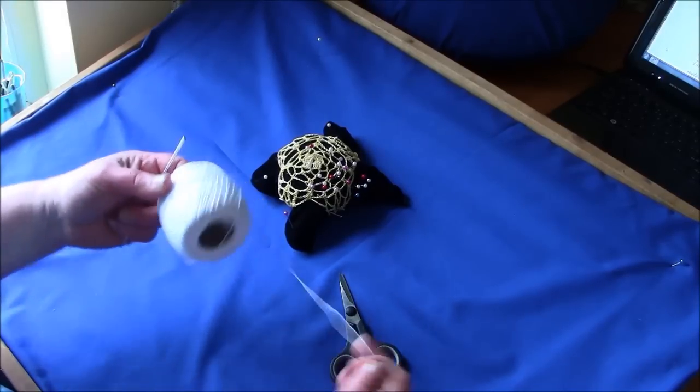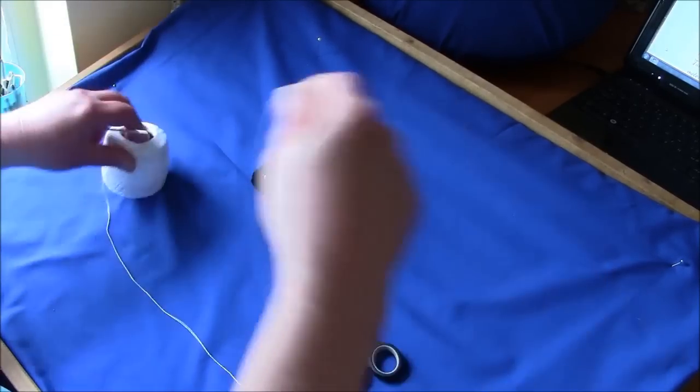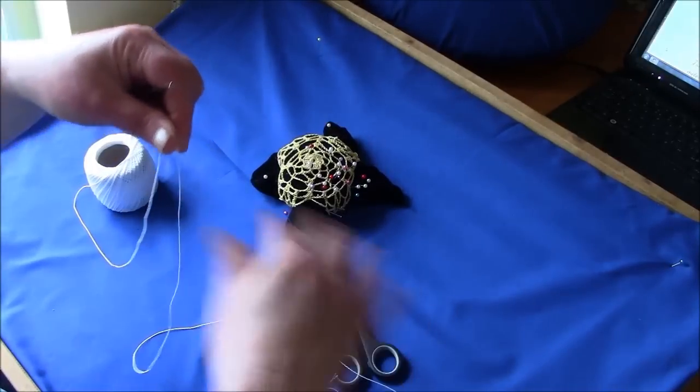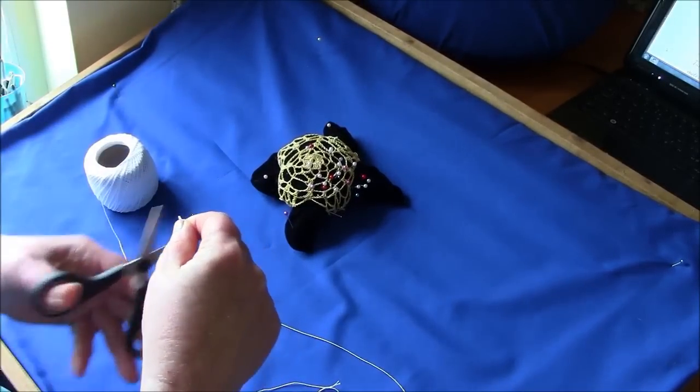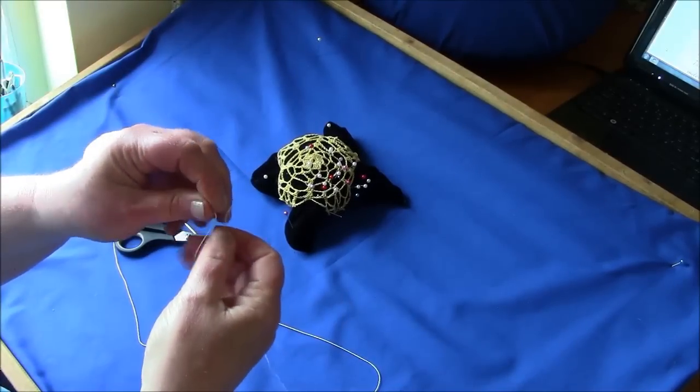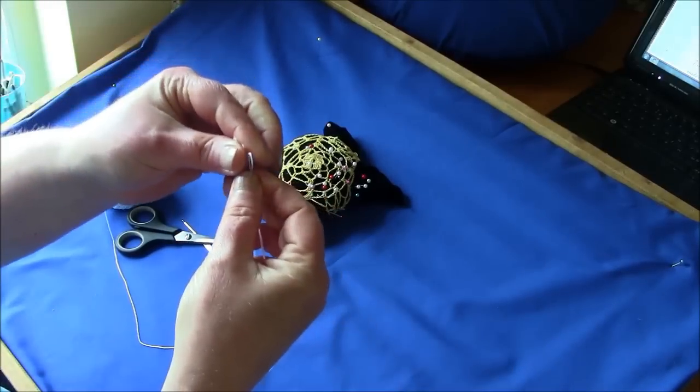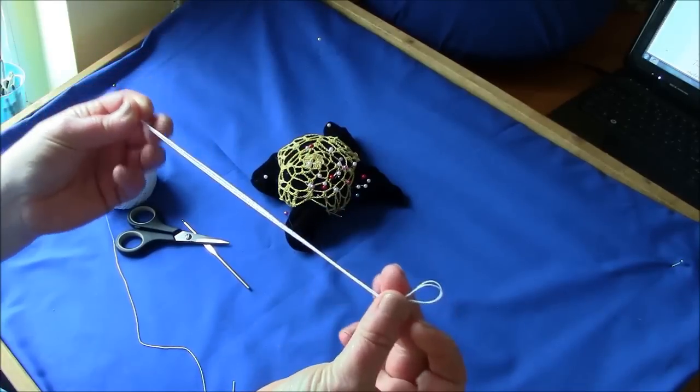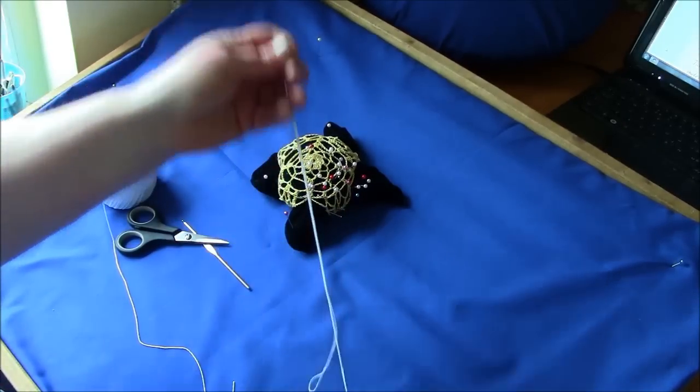Take a piece of thread of about 1 meter or 1 yard. Put the 2 ends together and fold, so you have 4 strands of thread which will form the cord.